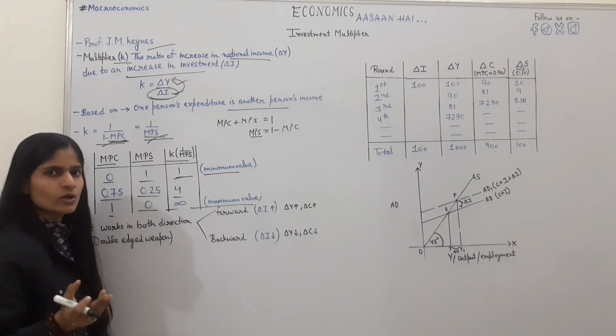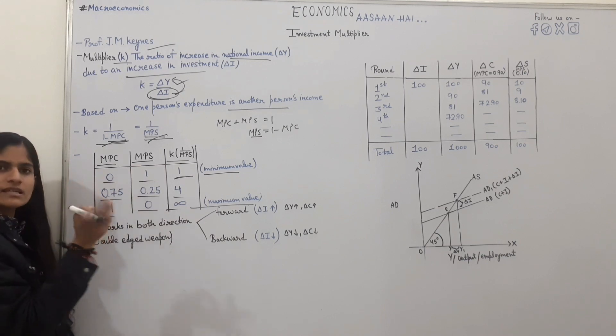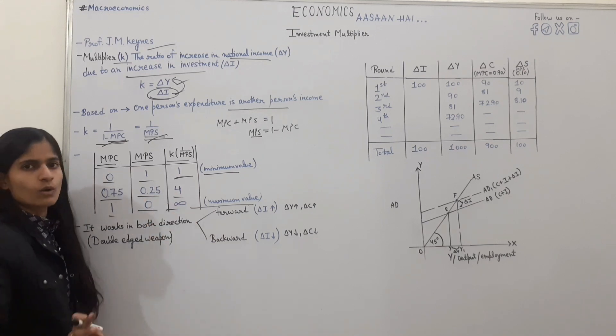K value minimum 1 and maximum infinite. Minimum 1 will be when MPC will be 0. And maximum value infinite will be when MPS will be 0.